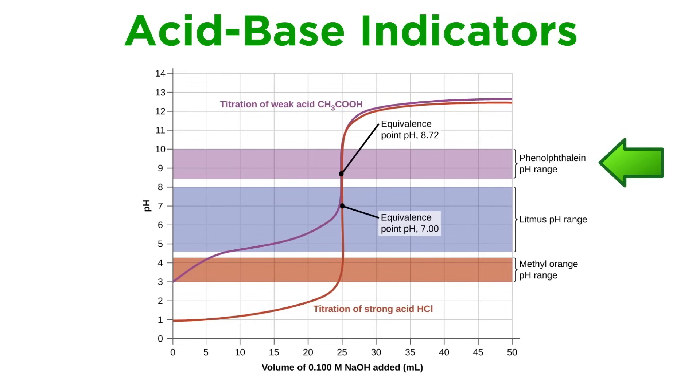Phenolphthalein has a color change interval of between 8 and 10, so this is an appropriate indicator to use when the titration being performed has an equivalence point at a pH within that range.